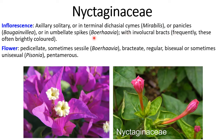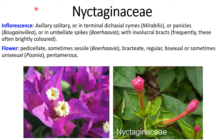Flowers are pedicellate, sometimes sessile in Bougainvillea. Bracteate, regular, bisexual, or sometimes unisexual — example of unisexual flowers is Pisonia. Flowers are pentamerous.